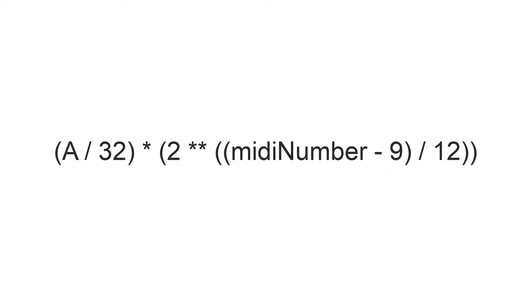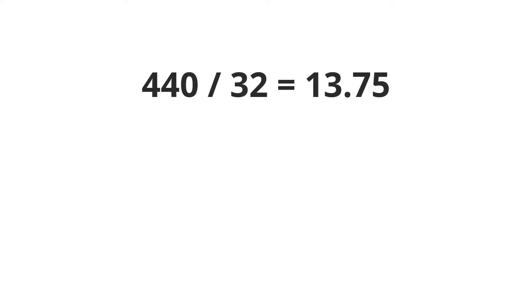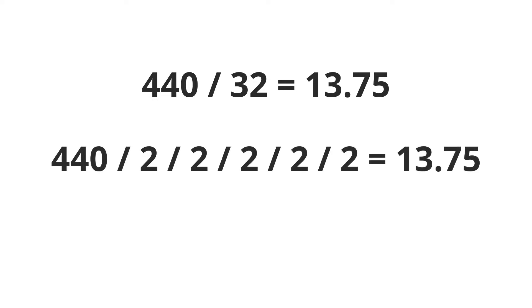So this equation I used in the video — let's briefly go through that. A over 32, meaning A divided by 32, times 2 to the power of MIDI number minus 9 divided by 12. A is 440 Hz, our reference note. Let's focus on the first part: 440 divided by 32 equals 13.75. That would be the same as 440 divided by 2, five times, which also equals 13.75. Or equivalently, 440 times 2 to the power of minus 5.